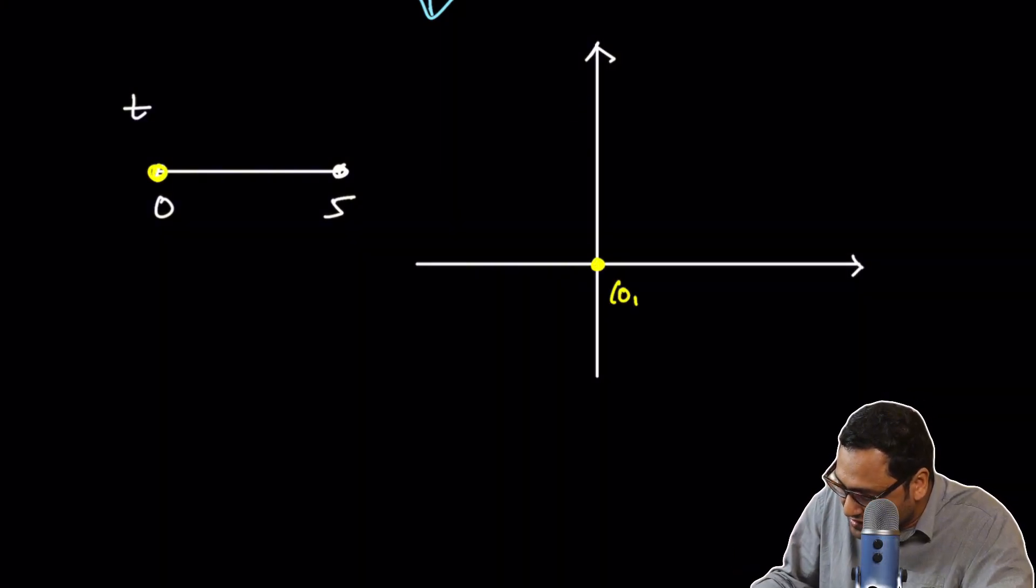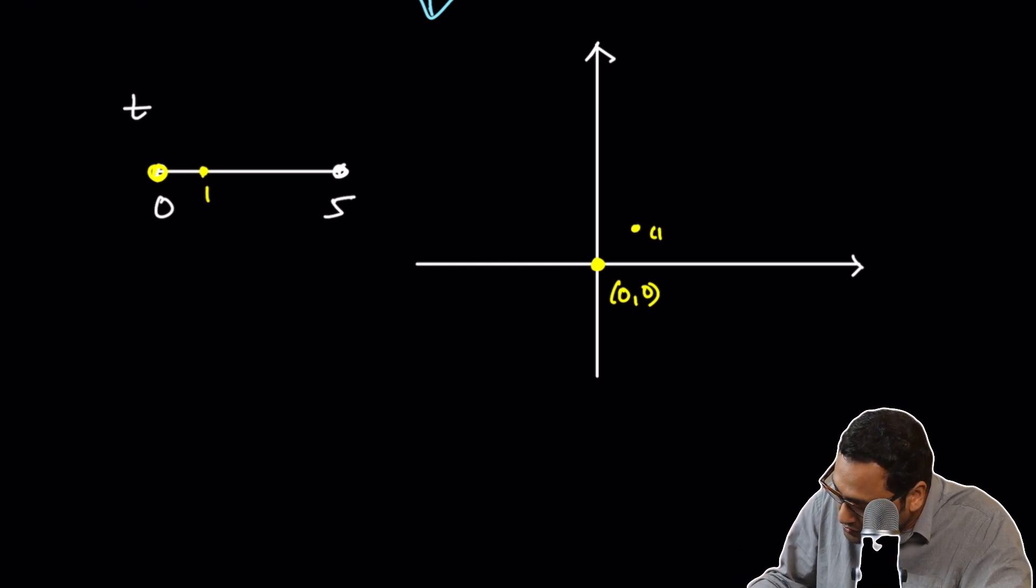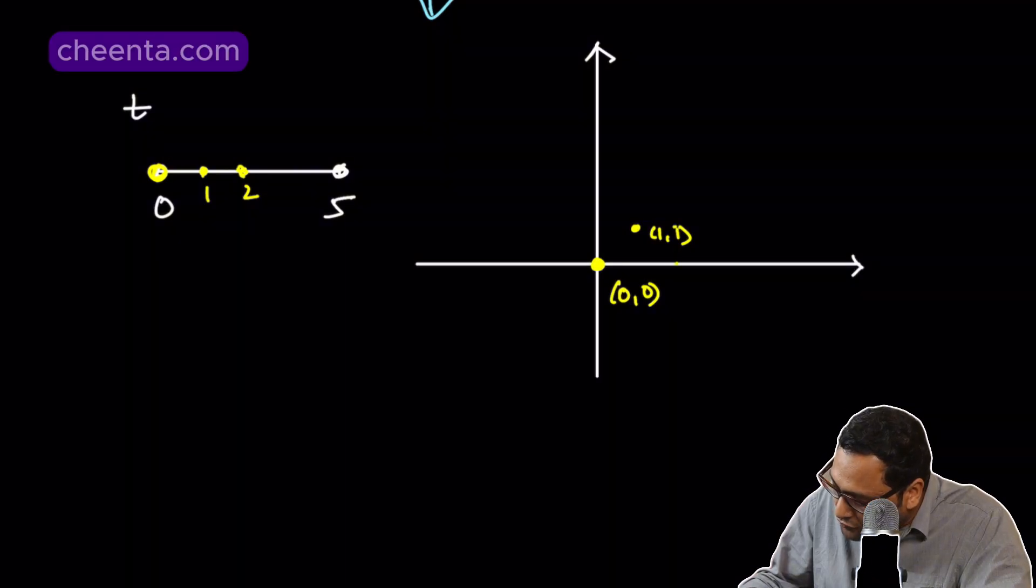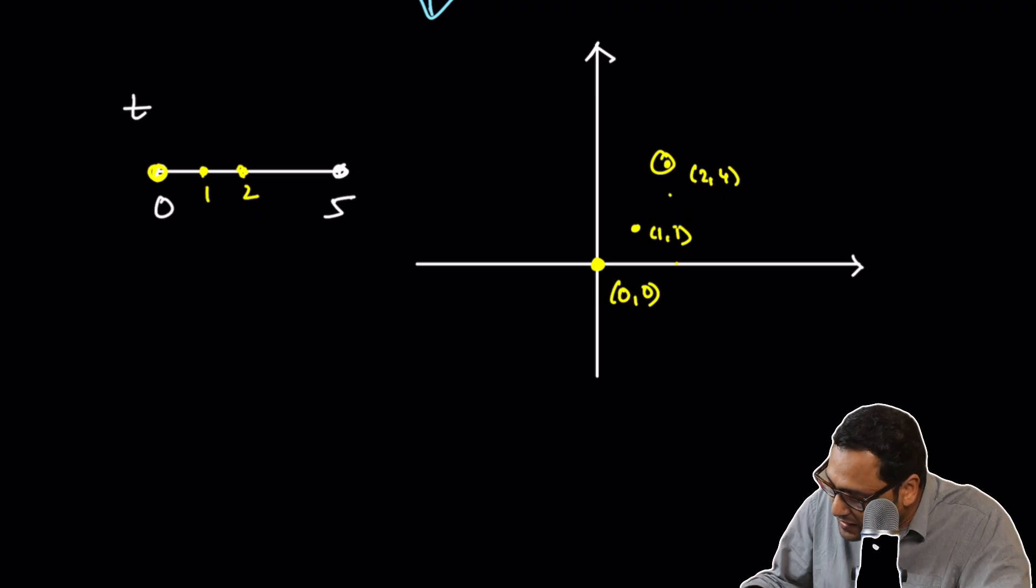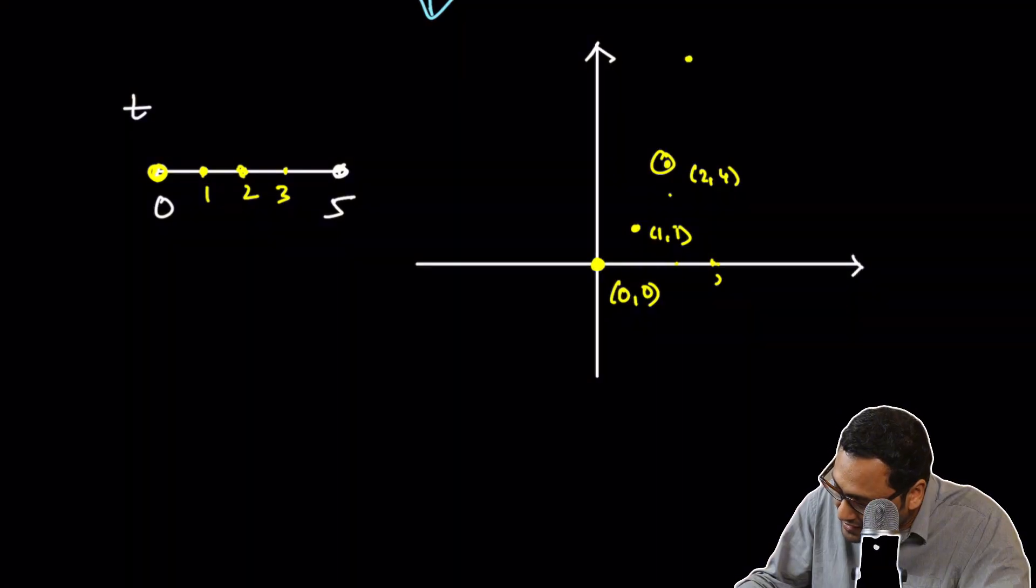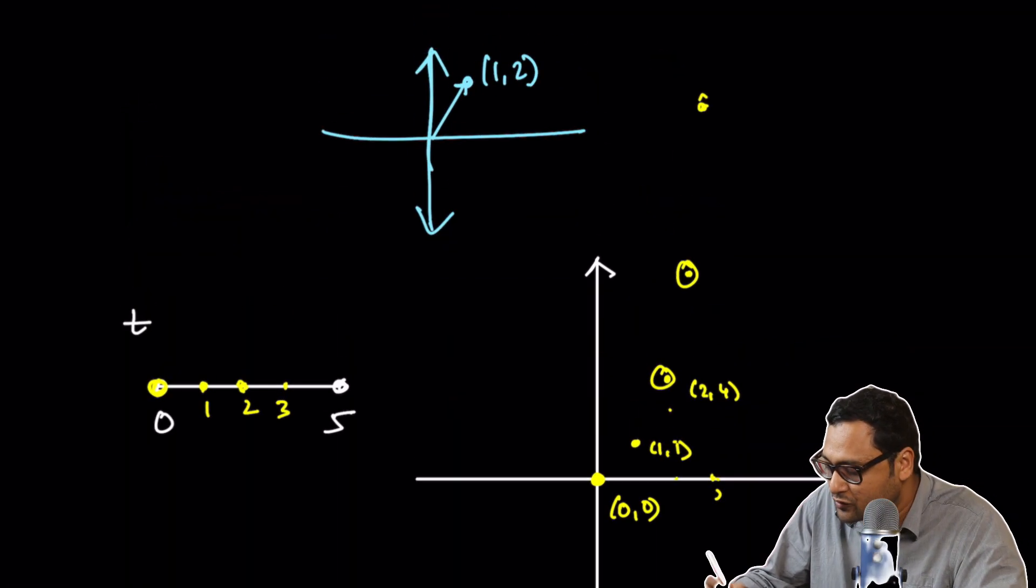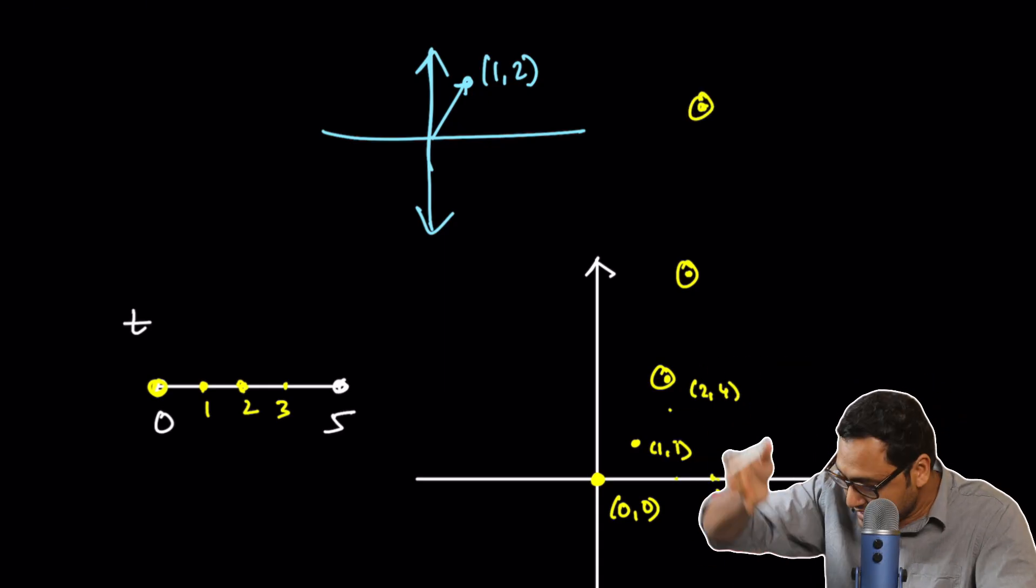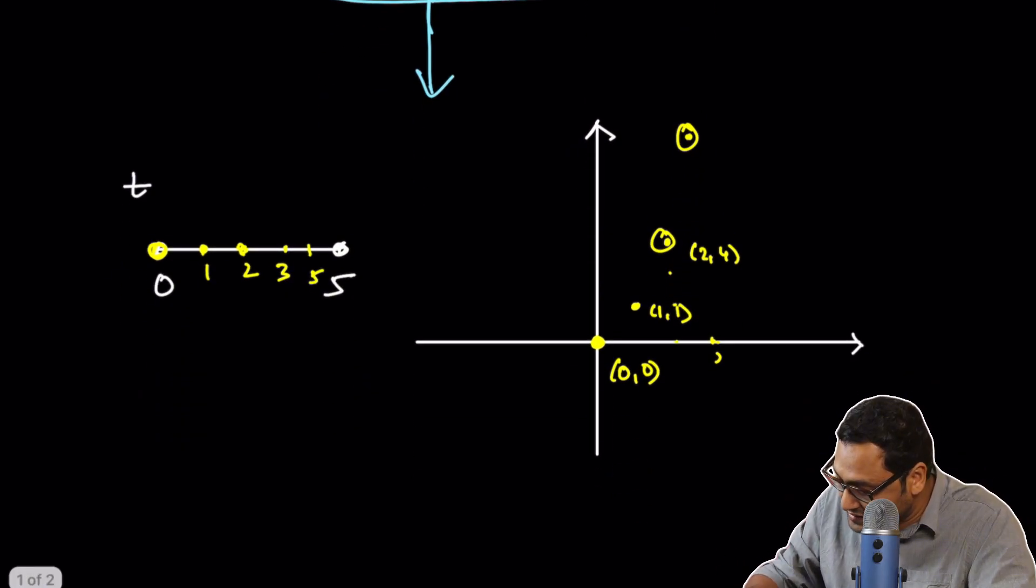So, every point, 0 is mapped to (0, 0). 1 is mapped to (1, 1). 2 is mapped to (2, 4). 3 is mapped to (3, 9). 4 is mapped to (4, 16). And 5 is mapped to (5, 25). So, you see the entire map of the interval 0 to 5 to this R² plane.